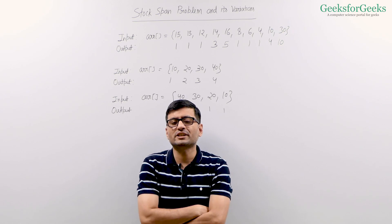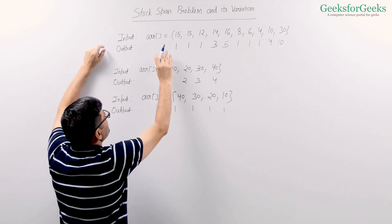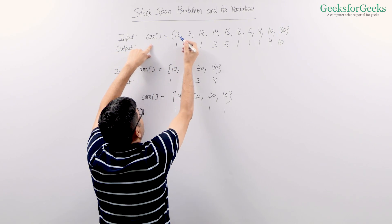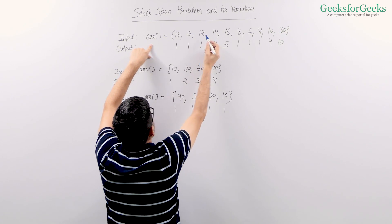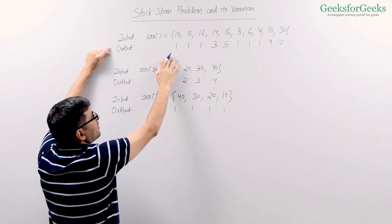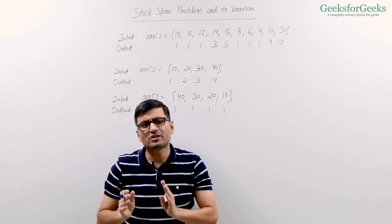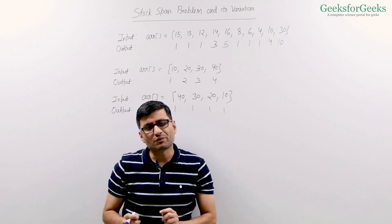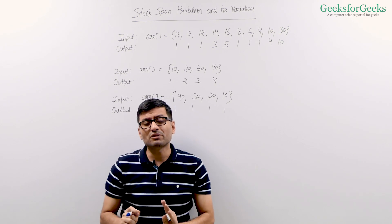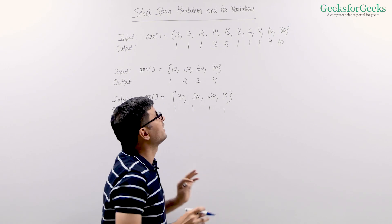In this video, I will discuss an example problem. We are given prices of a stock for N days. Price for day 1 is 15, price for day 2 is 13, and so on. We need to find the span of the stock for all N days. Span of a stock on a day is equal to the count of contiguous days just before it which have the value smaller or same, and the current day is also included.